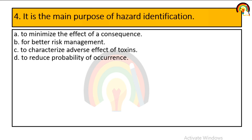What is the main purpose of hazard identification? The options are: to minimize the effect of consequences, for better risk management, to characterize adverse effect of toxin, or to reduce probability of occurrence. The main purpose of hazard identification is to characterize the adverse effect of toxin.